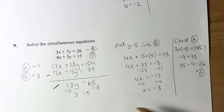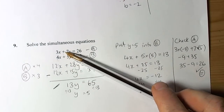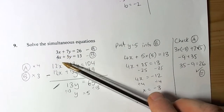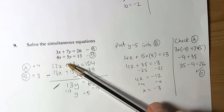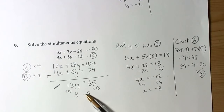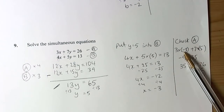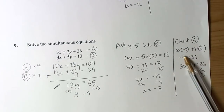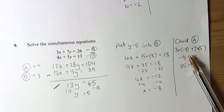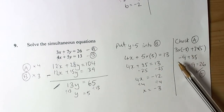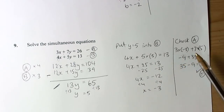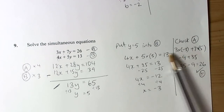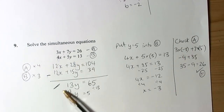Solving simultaneous equations shouldn't be too bad if you practice a little bit. Be careful if there are negatives involved — just think of your rules for how negatives work. The key thing is to check your answers: if you don't get the right answer in the check, it's usually because you've done a subtraction when you should have done an addition, or vice versa. Go back through your working and check for that kind of mistake. Good luck with practice — we'll get you there.